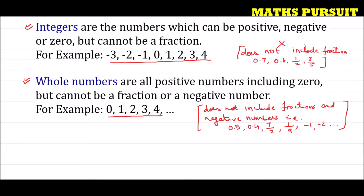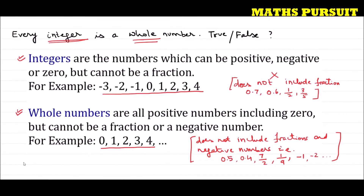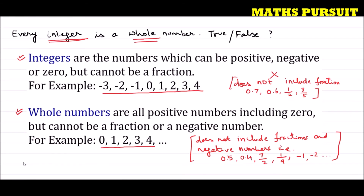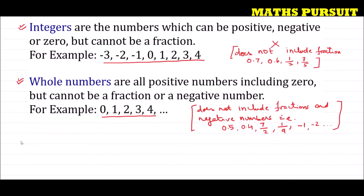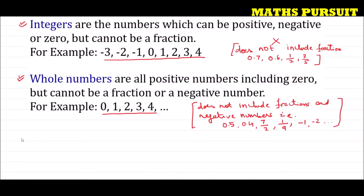The statement says: every integer is a whole number — true or false? After looking at the definitions of integer and whole number, if we pick one integer, say minus 3, minus 3 is not a whole number because whole numbers do not include negative numbers. So the statement is false.